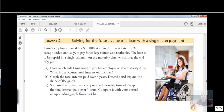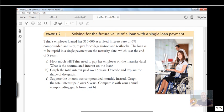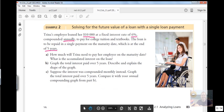So let's do one more example. Example two from your textbook says this. Trina's employer loaned her $10,000 at a fixed interest rate of 6% compounded annually to pay for college tuition and textbooks. The loan is to be repaid in a single payment on the maturity date, which is at the end of five years. So the payments are basically, there are no regular payments. So we are just finding out how much she needs to repay here. Boring $10,000. And a single loan payment, like I said, does not involve regular payments. So this one, we can really just use the same formula that we used in chapter one, of finding out what this is going to be worth.